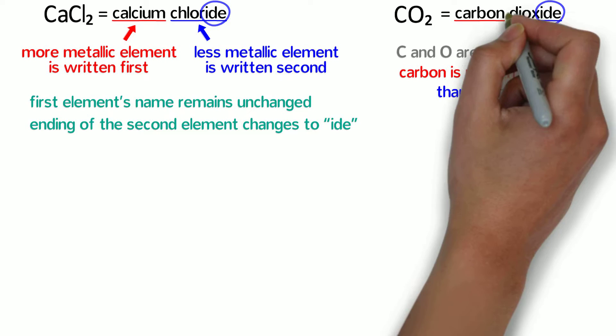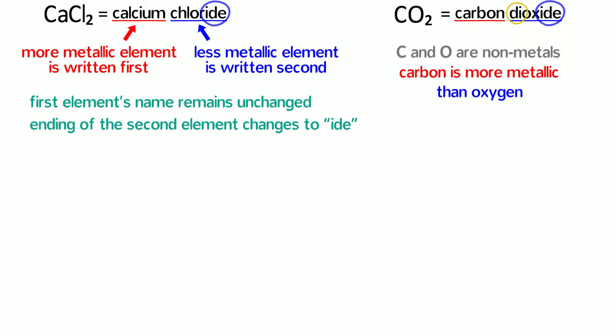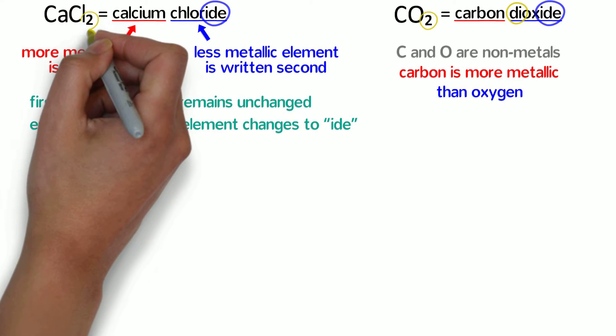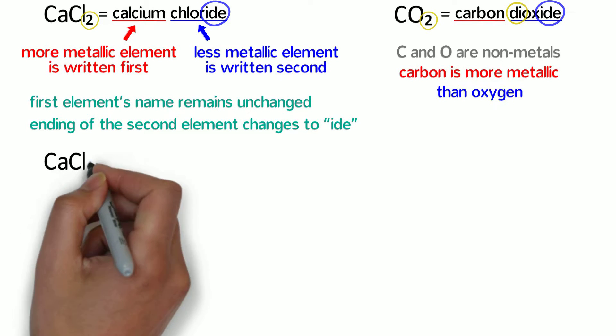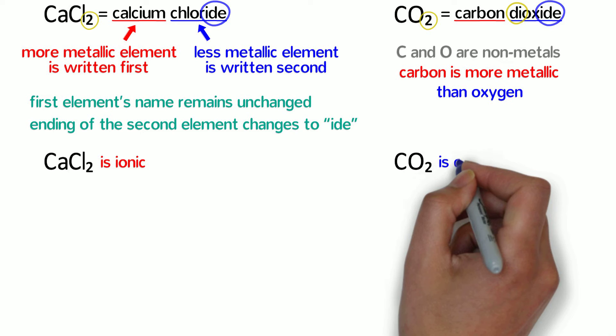Also we notice there is a di prefix in front of oxide, which corresponds to the 2 in CO2. However, calcium chloride, which also has a 2 in the formula, does not have a di prefix. Why is that? Because calcium chloride is ionic and carbon dioxide is covalent.